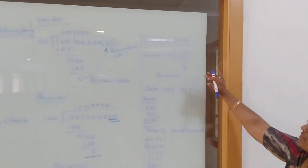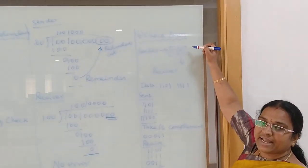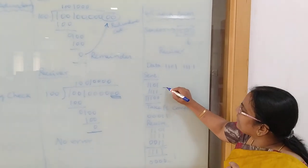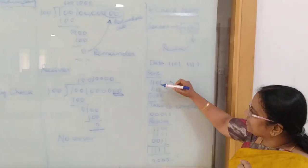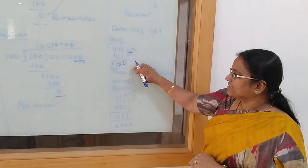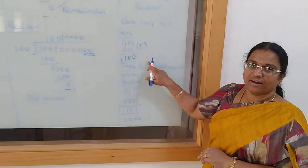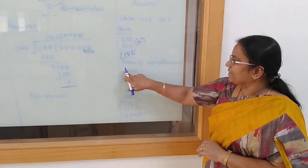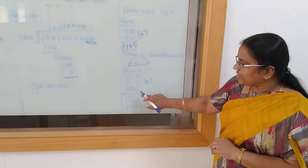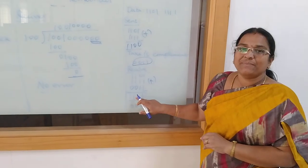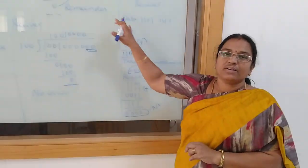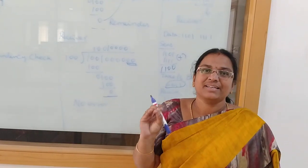The fourth method is checksum. The sender takes the data and applies a complement function. On the sender side, we add the data segments — for example, getting 1100 — and take the one's complement of the sum, giving 0011. This checksum is sent to the receiver. On the receiver side, all the data segments along with the checksum are added together, giving 111, and the one's complement is taken, giving 000. If the result is all zeros, no error has occurred.